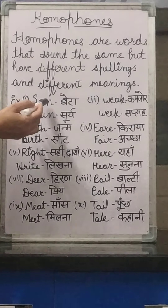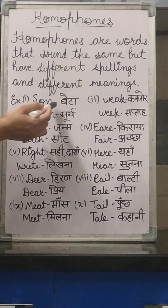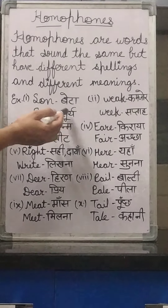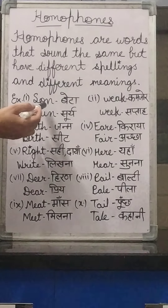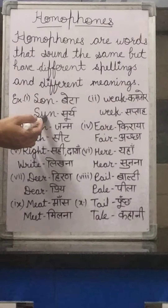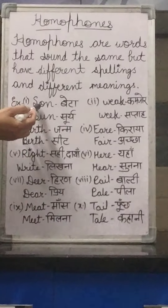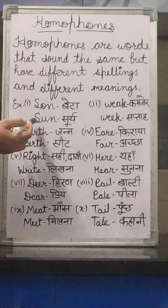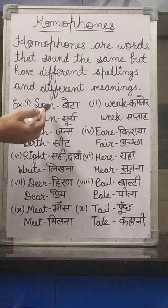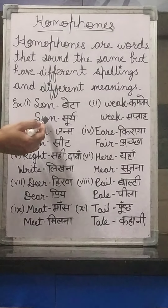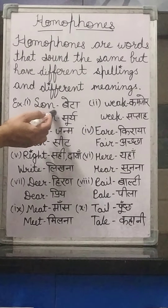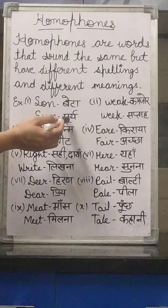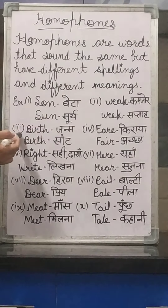Just see the examples. First: S-O-N, meaning 'son' (beta), and S-U-N, meaning 'sun' (surya). The sound of 'son' and 'sun' is the same, but they have different spellings and different meanings.